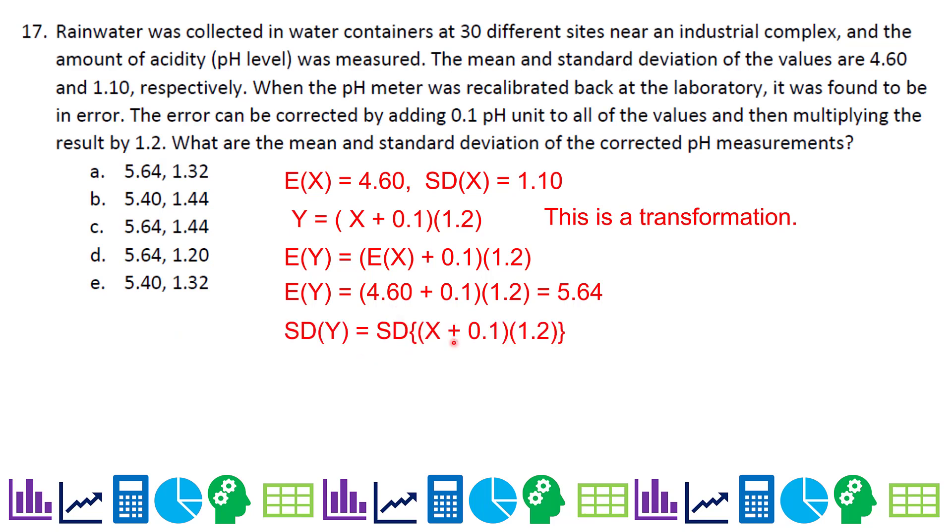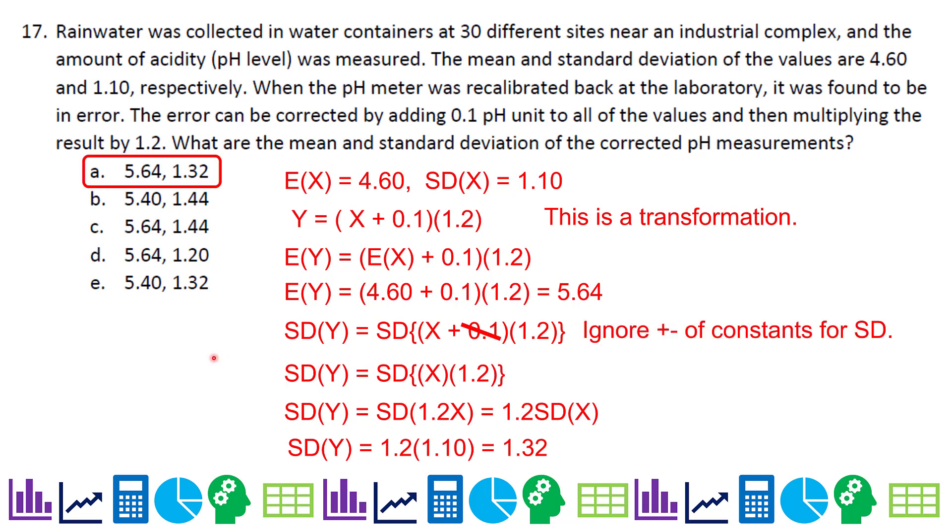Then standard deviation, I'm basically going to take that same equation, but here's the difference. That plus 0.1 doesn't do anything to affect spread. So we ignore it. I completely get rid of it. So I just have 1.2X basically. And so that's 1.2 times my standard deviation. So I just do 1.2 times 1.10, and I get 1.32. Remember on transformations, ignore adding constants or subtracting constants when getting your standard deviation for the transformation. Make sure you write that on your cheat sheet or cheat card, I should say.